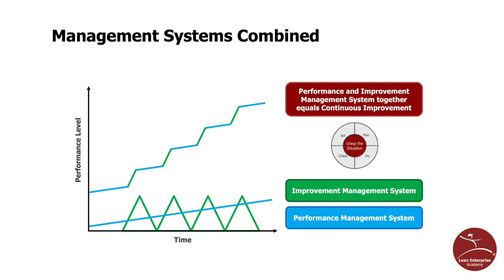To summarize, here's a graphic showing continuous improvement. Continuous improvement is a result of combining good performance and improvement management systems. It is only when the two are combined do you get continuous improvement supported by relentless application of the Plan Do Check Act cycle.